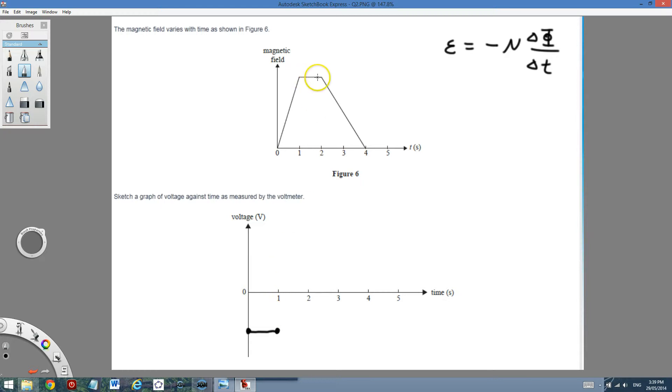Now, suddenly, the magnetic field is flat. So there's no change of magnetic field between 1 and 2 seconds. So what I can say is the rate of change is 0, voltage is 0.